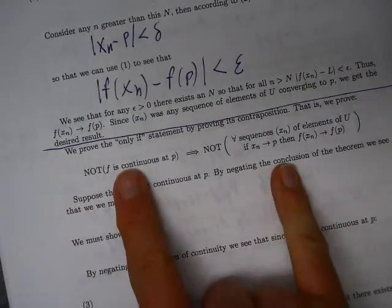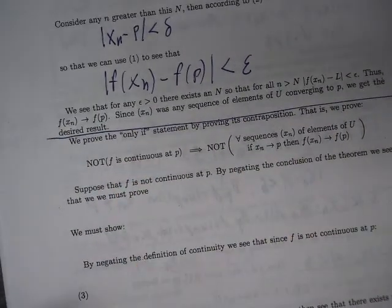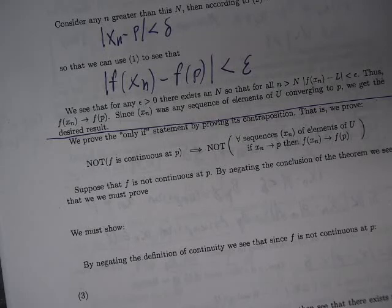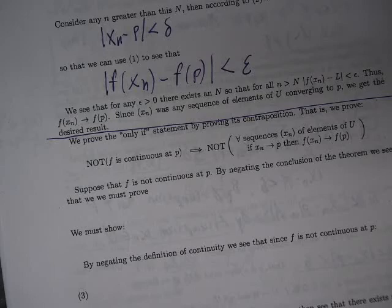Let's think about what the converse says. By the principle of contraposition, instead you can prove: not f is continuous at p implies not — for every sequence xn of elements of U, if xn converges to p, then f of xn converges to f of p. We'll prove that equivalent statement.